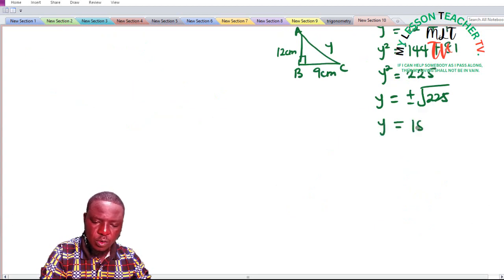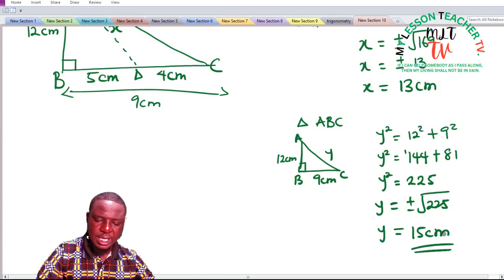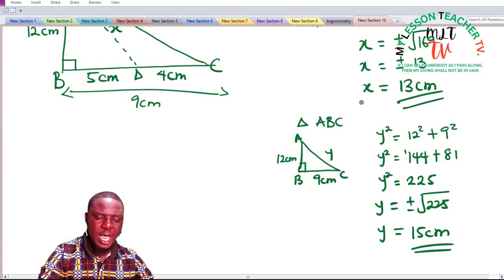And when you take the absolute value, you have your y to be equal to 15 centimeters. So we have gotten our value for x and our value for y, where x is 13, y is said to be 15.